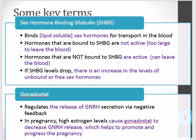The gonadostat regulates the release of gonadotropin-releasing hormone (GnRH) secretion via a negative feedback mechanism. The greater the amount of gonadostat, the less GnRH is released. During pregnancy, high estrogen levels cause the gonadostat to decrease the release of GnRH, which helps promote and progress the pregnancy.